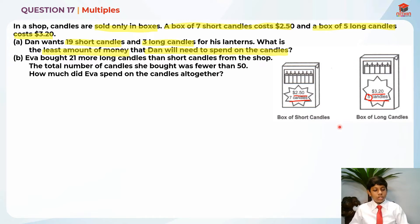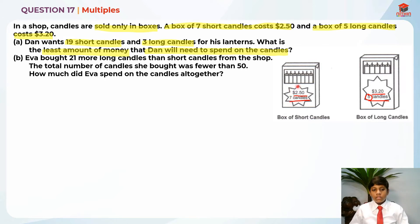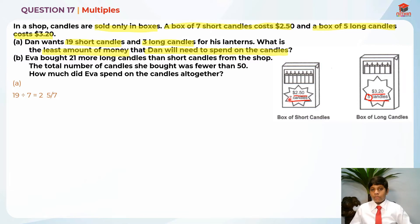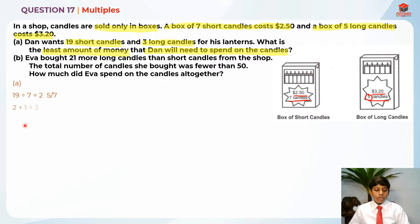For 19 short candles there is a problem because one box only has seven. So I'll take 19 divided by 7, which gives me 2 remainder 5 — that is, 2 whole and five-sevenths. Since I cannot take candles out of a box, I round that fraction up to 1, making it 2 plus 1, which equals 3 boxes needed.